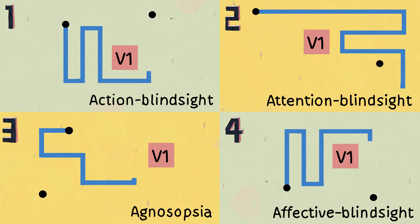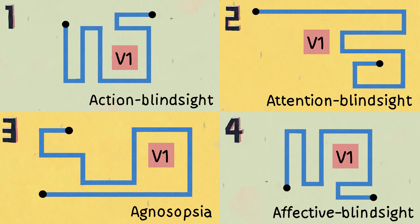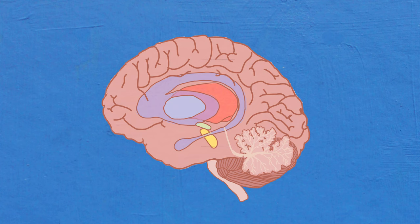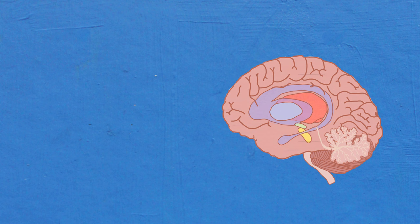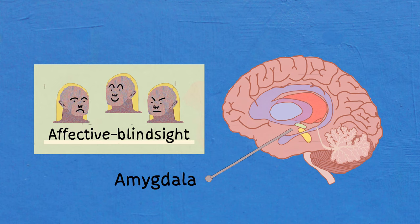Now, we do not know exactly which structures are involved for the different abilities in blindsight yet. However, research is ongoing. There are, for example, good indications that affective blindsight utilizes the amygdala, a structure known to be involved in the processing of emotions.